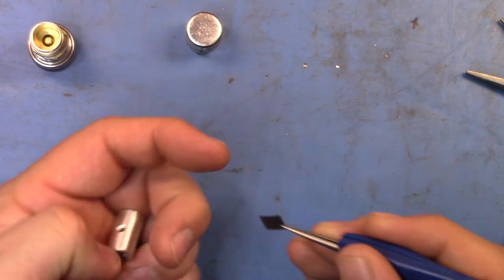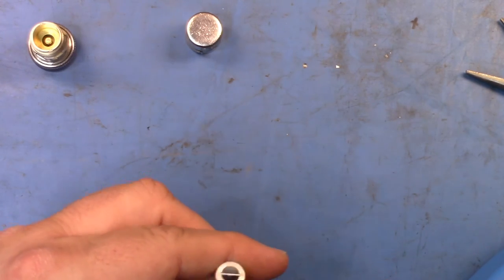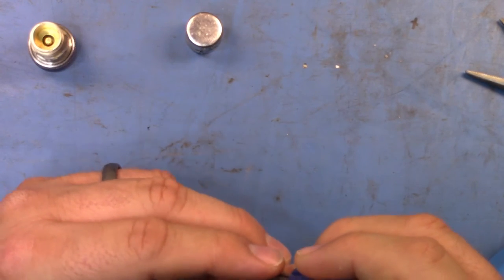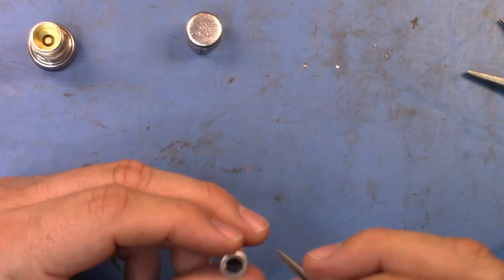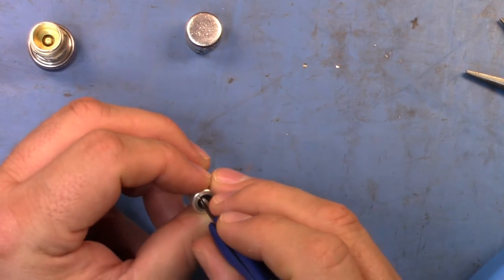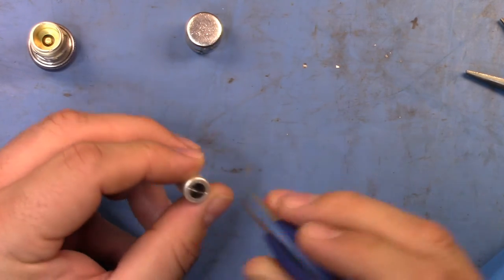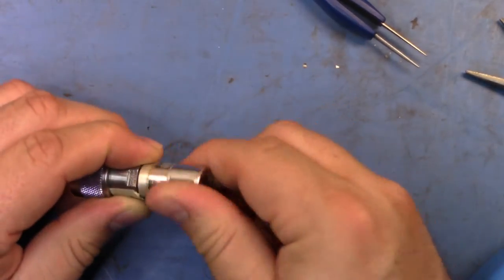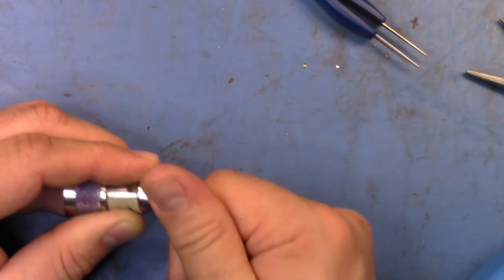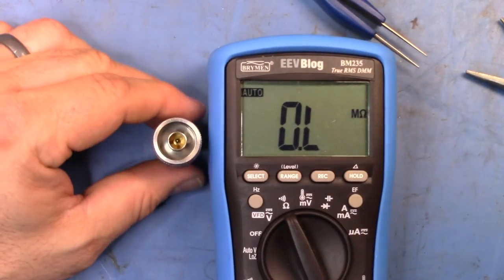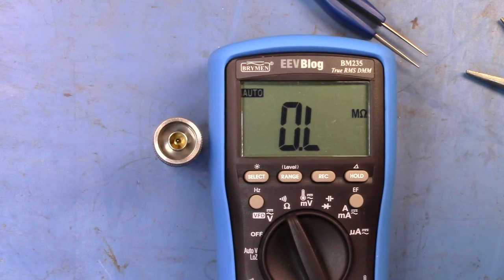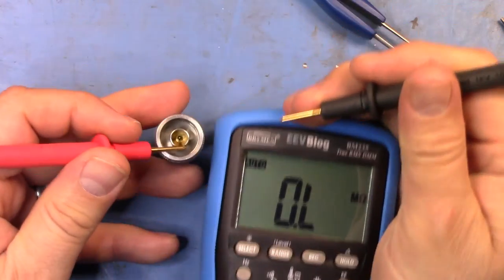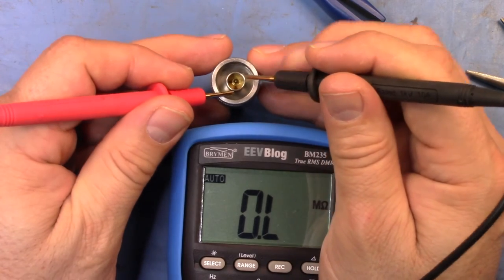I'm just simply going to slide this in, because you would expect that if this was as simple as just pushing this together, this is actually how they would build these things. Let's screw this back down again and drag over the EEV blog meter. Let's see if I can see whether or not that made a difference.